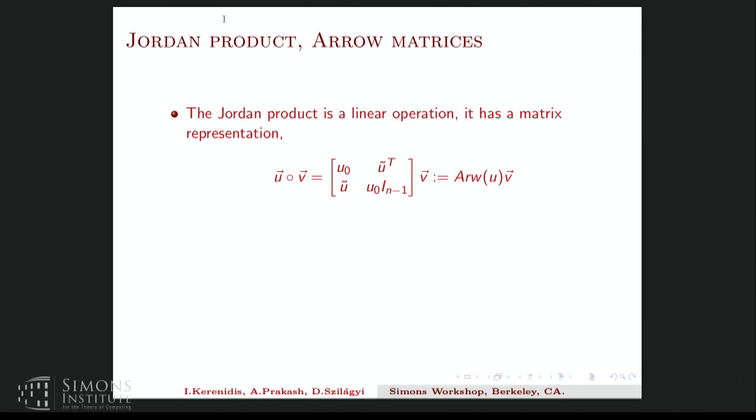So this Jordan product is a linear operation. In particular, it has a matrix representation. So if I write the Jordan product as a matrix, I get these arrow matrices. So it's a matrix which has u on the columns, on the first column, u on the first row, and on the diagonal. So it's shaped like an arrow. So the Jordan product u dot v can be written as arrow u times the vector v.